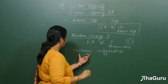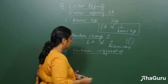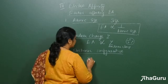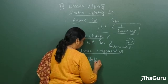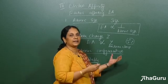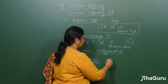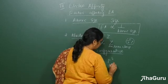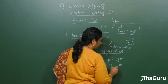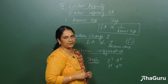The third factor is electronic configuration. If the atom has a half-filled or fully filled stable electronic configuration — such as p3, p6, d5, or d10 — it is very difficult for the atom to take up an additional electron.